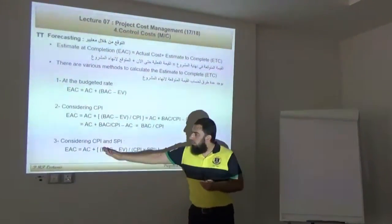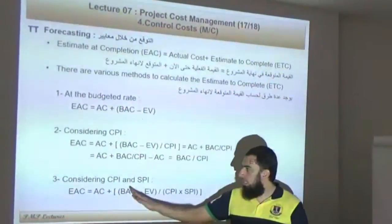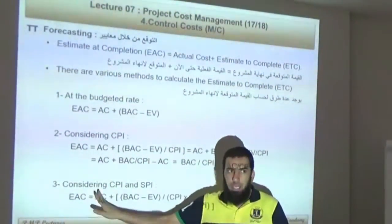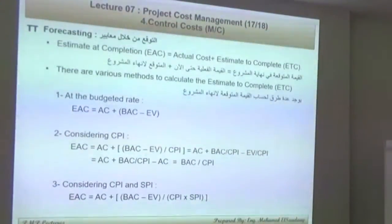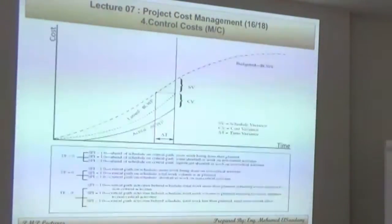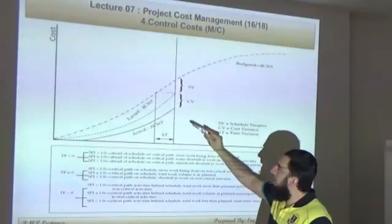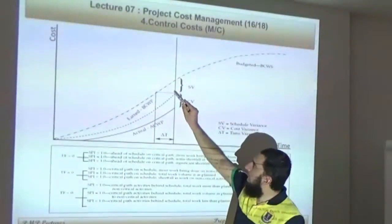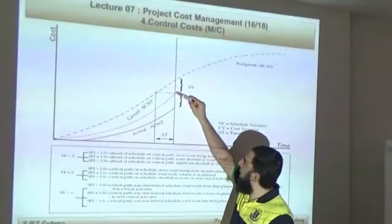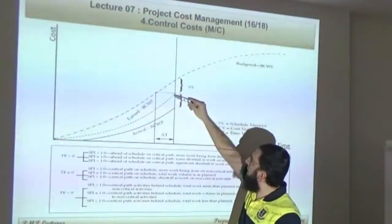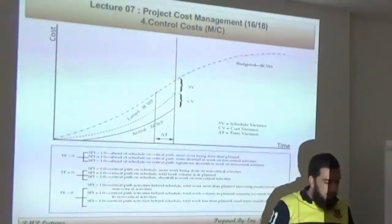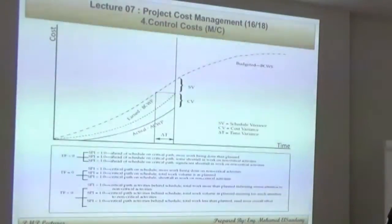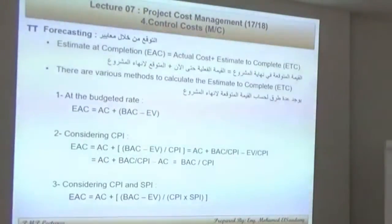I am trying to forecast the future part. This is the historical part that's already paid, and this is the future part. Let's go through each one of them. The first method is at the budget rate — I start to think that the delay that has been made will not be repeated, so I will go parallel to this line with the same rate of the plan.